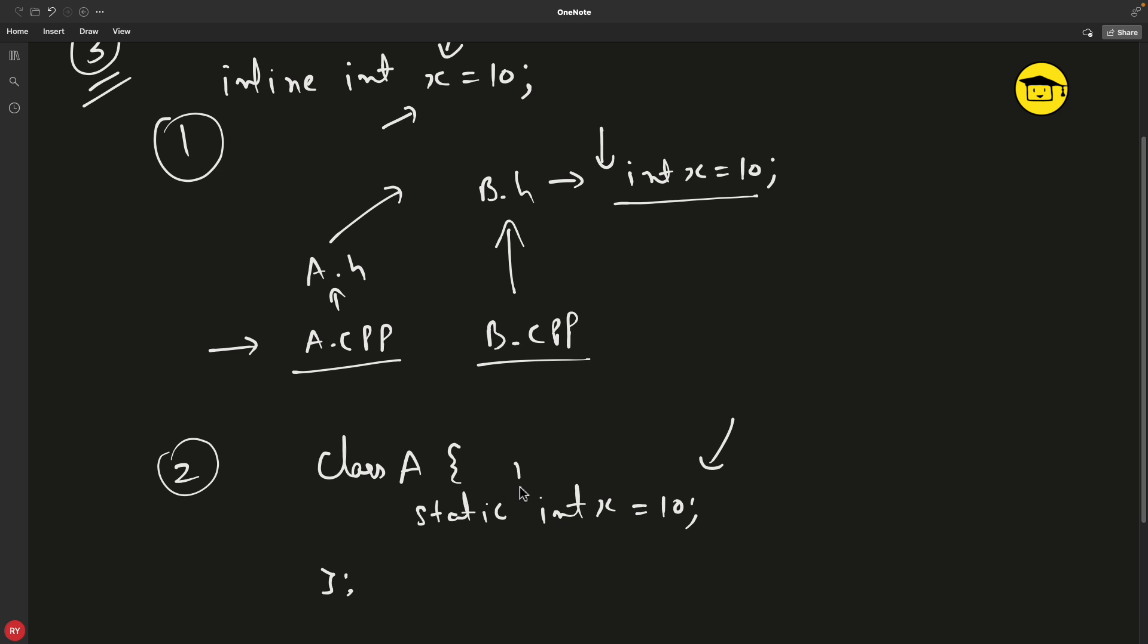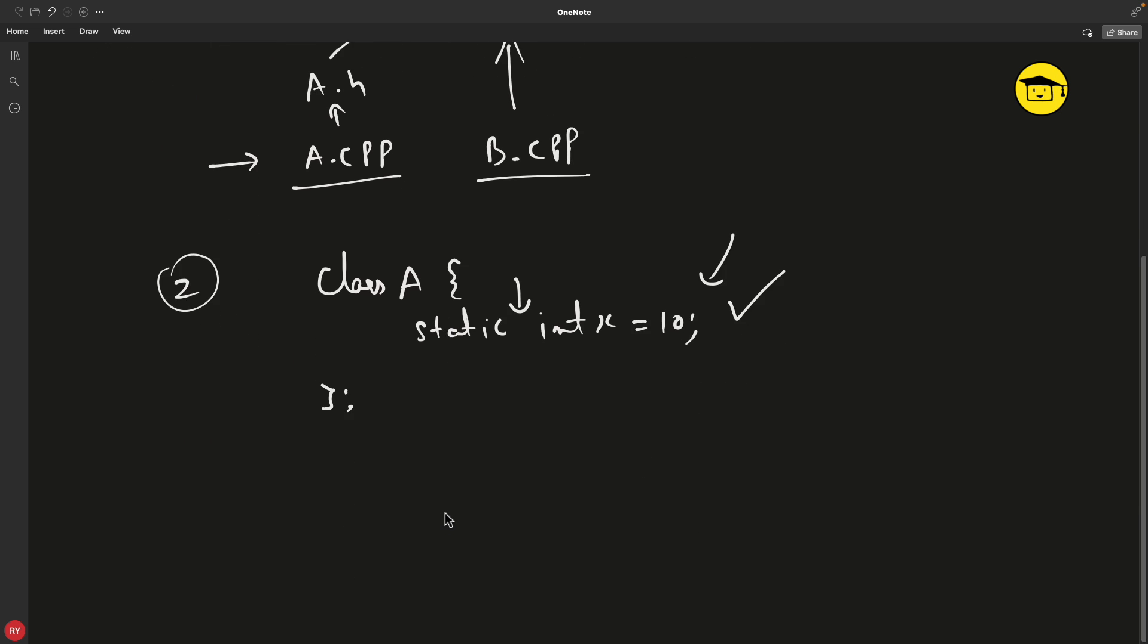So how would you do that? Just put inline here, static inline int x is equal to 10. This would compile. And before that, if you have ever faced this issue, what you actually have to do, you know, it was really very big pain. Because then after defining this class, you have to put some lines here, pointing out to this x. And then you initialize that with 10.